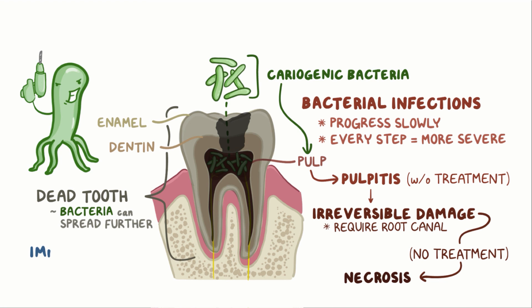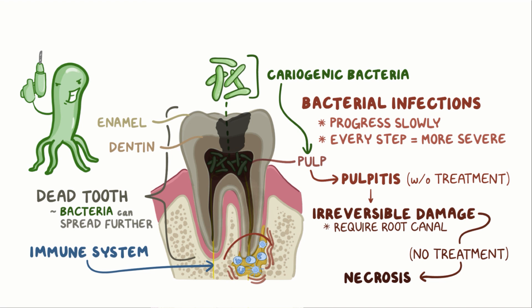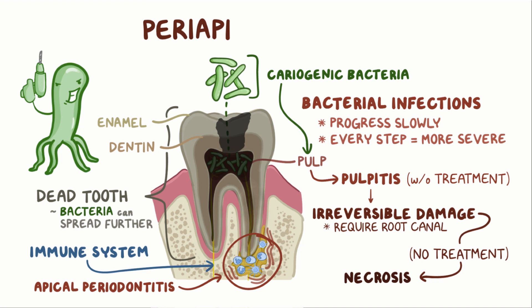Our immune system will, at that point, try to stage a defense against the apices of the dental root. We call that battlefield apical periodontitis, which is one of the periapical lesions.